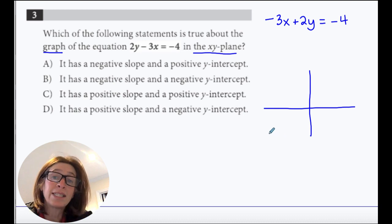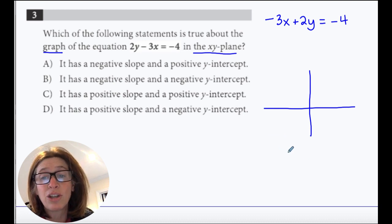So first of all, it's in standard form, and one of the quick ways to graph in standard form is by using the intercepts. So I'm going to quickly get two points on the graph here.